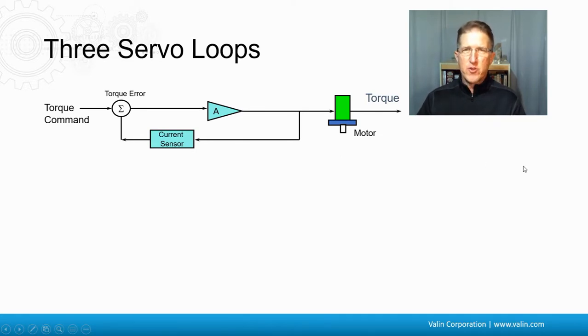But there's more than just one servo loop. There's actually three. So the most basic one is really down at the chip level. It's inside the drives typically. There's a torque command that comes in here and it has the torque error. And this is measured internally. This is the current sensor, making sure that the right amount of current is going to the motor. So that is the current loop.